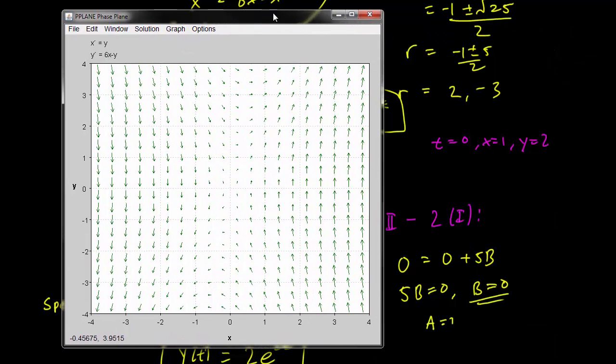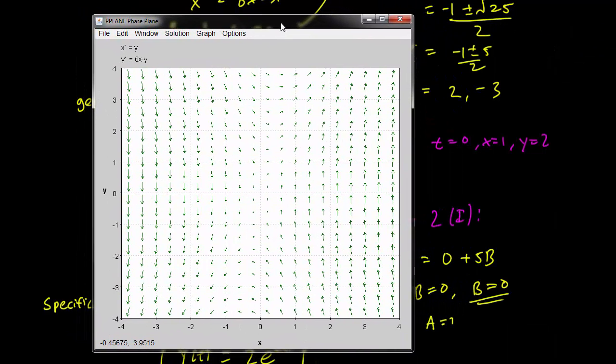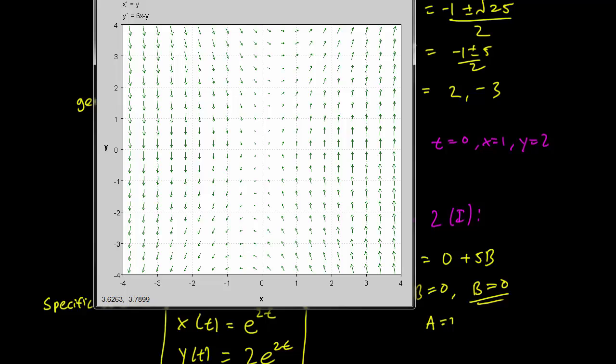Let's check our problem. If you remember, our initial conditions were t equals 0, x equals 1, y equals 2. So at time 0, we started at x = 1 and y equals 2. Let's see where that brings us.